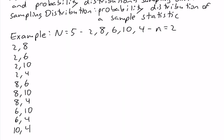From each of these samples we can compute a sample mean. The sample mean for the first sample will be 8 plus 2, which is 10, divided by 2, which equals 5. The sample mean for the second sample will be 6 plus 2, which is 8, divided by 2, which equals 4.